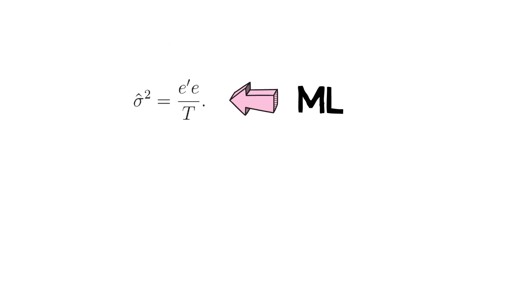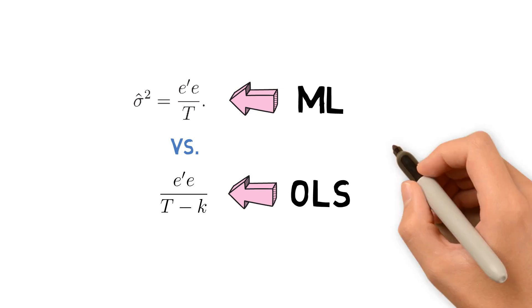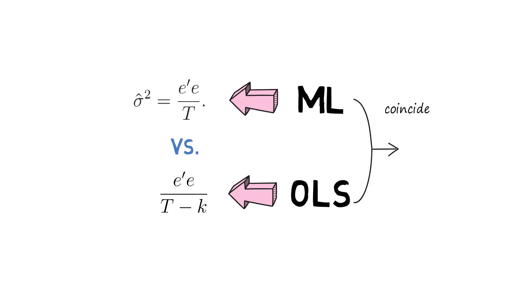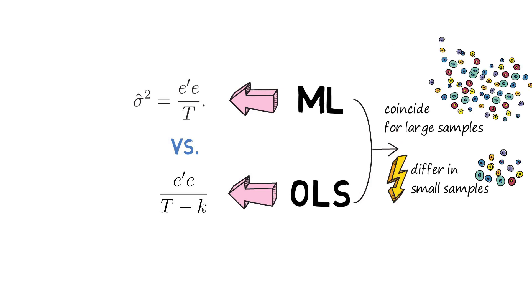If you compare that maximum likelihood estimate with the unbiased OLS estimate of the variance — which would be e prime e divided by t minus k, where k are the number of factors estimated — you notice that both estimators coincide for large samples, but they differ in small samples. In fact, the MLE estimate for sigma square is downward biased in small samples.